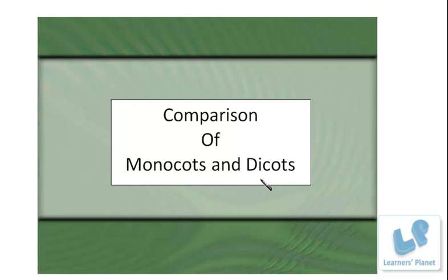You know what we mean by angiosperms or which plants come under this particular division? The plants which are able to bear seeds and the seeds are enclosed inside the fruit. So such type of plants having these types of seeds are coming under the division that is angiosperms. Now further, depending upon the number of cotyledons present inside the seeds, these plants are subclassified. And those classes are monocots and dicots.